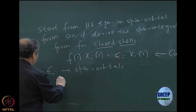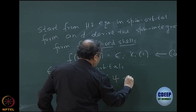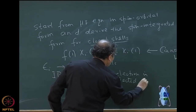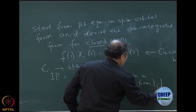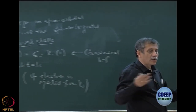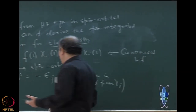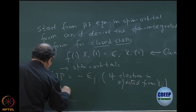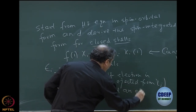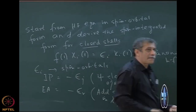The ionization potential is minus epsilon_j. If an electron is ejected from chi_j — and when I say this, this is only a classical way of saying it means that in the N-1 electron determinant chi_j is absent. And if you add an electron to an orbital r, then the electron affinity is minus epsilon_r.